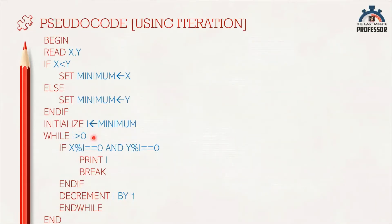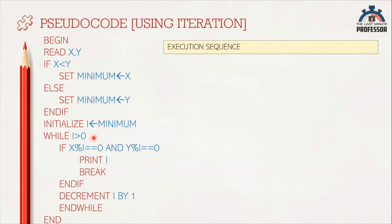Consider an example: what is the GCD of 4 and 6? Starting from the minimum of the two inputs, we check if 4 divides both 4 and 6 completely — no. Does 3 divide 4 and 6 completely? No. Does 2 divide 4 and 6 completely? Yes. So, print 2 as GCD. Let us now find the execution sequence for this pseudocode line by line for finding GCD of 4 and 6.